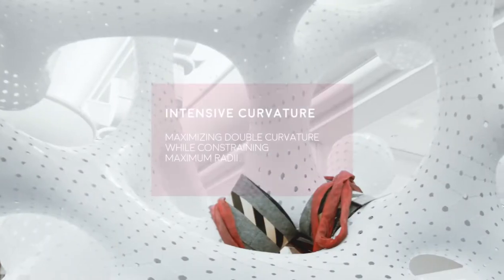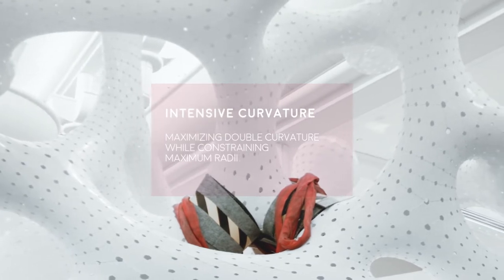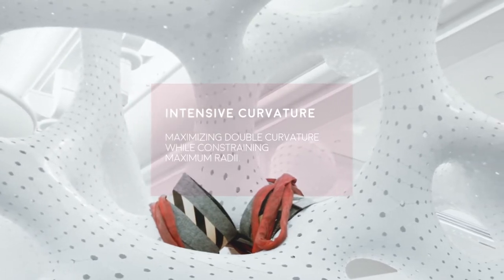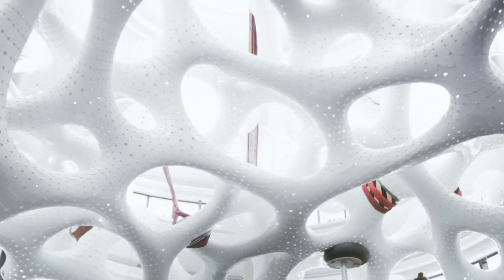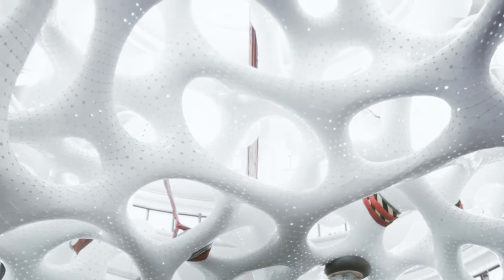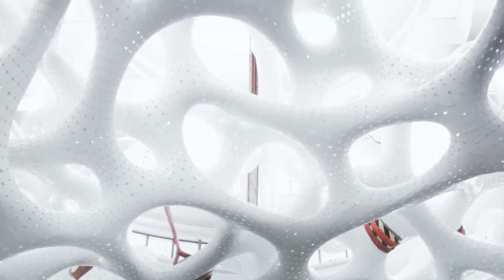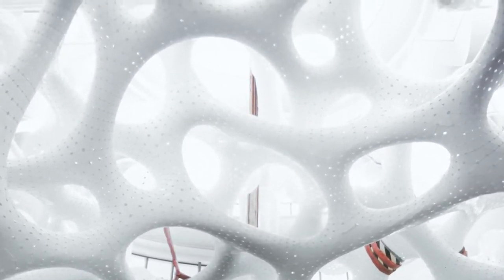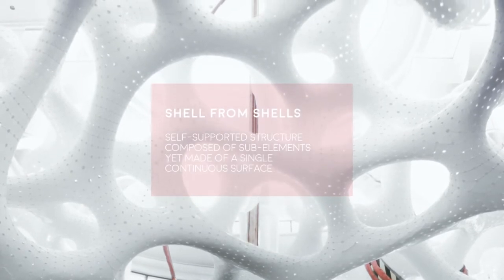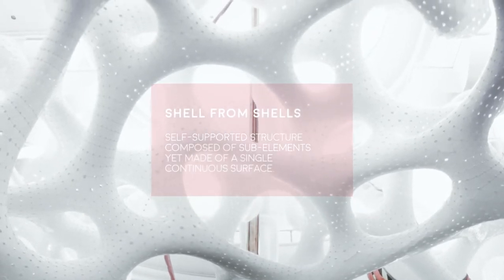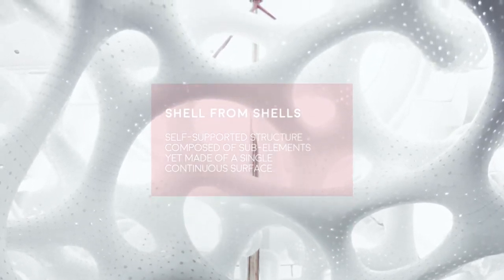But we fix a maximum radius. Which means that instead of having one single surface spanning from one side of that room to the other, you have to go through tubular elements, you have to go through split, recombination, resplit, merging together, resplitting together, etc.